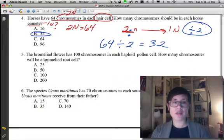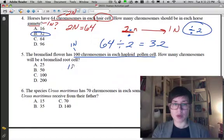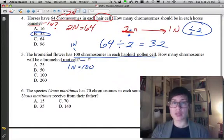For number 5 it says, in flowers that have 100 chromosomes that are found in their haploid pollen cells. Haploid is 1N. So, I know this is my 1N number. So, I'm going to write 1N equals 100. How many chromosomes will be found in the root cells? Root cells are body cells. So, they're not used for making babies. So, we know that's going to be 2N and that's our unknown.